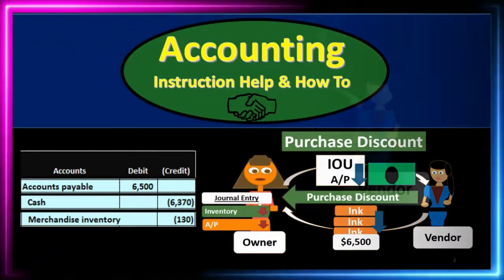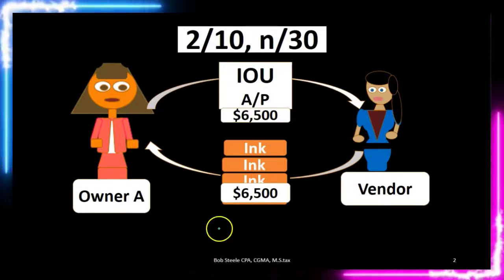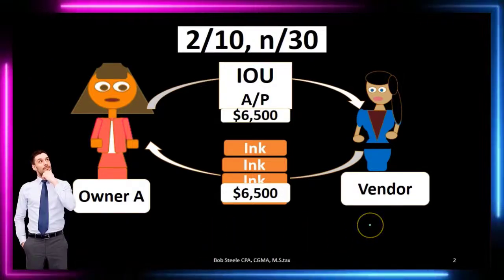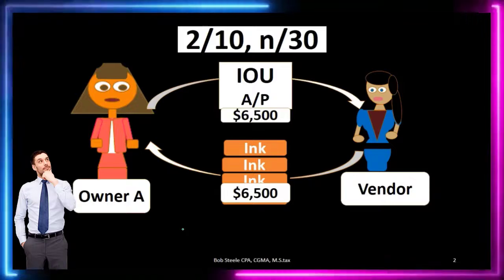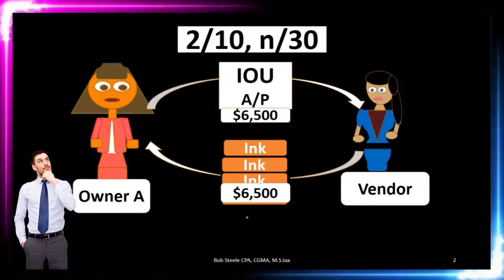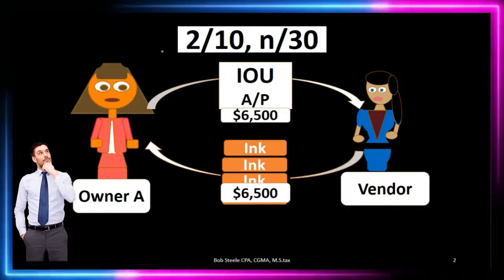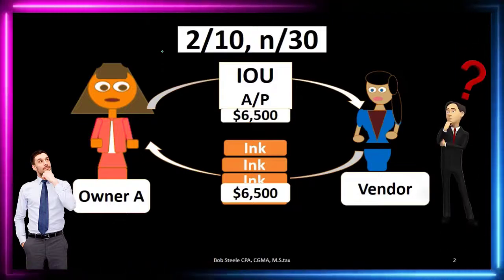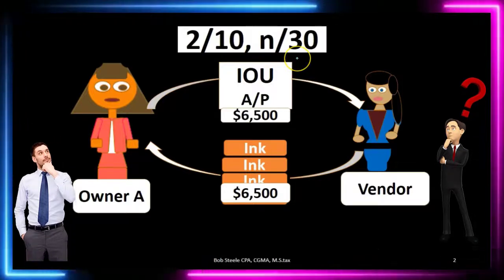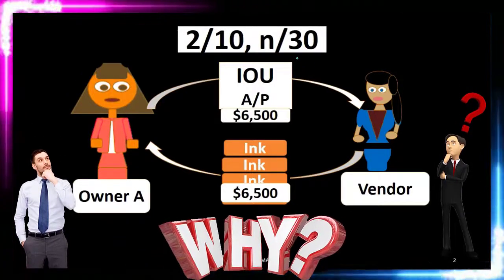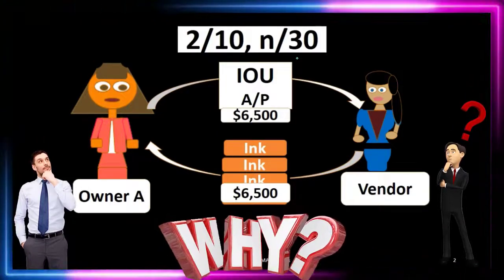In this lecture we're going to be talking about a purchase discount. We will be the owner on the left hand side of this transaction, purchasing inventory from the vendor on the right hand side. The discount will be going from the vendor to the owner — we're getting a discount on the purchase we are making. The new thing here are the terms of the discount, which are two slash ten, net slash thirty, meaning a two percent discount if we pay within 10 days, otherwise we pay within 30 days. The vendor offers these terms to increase their cash flow.